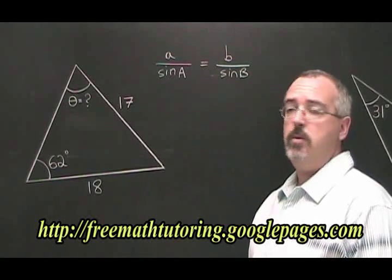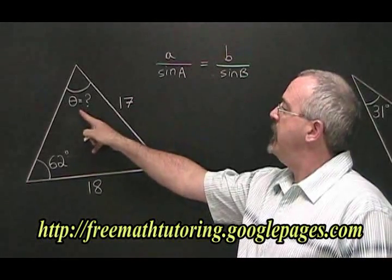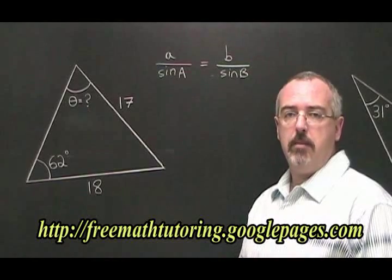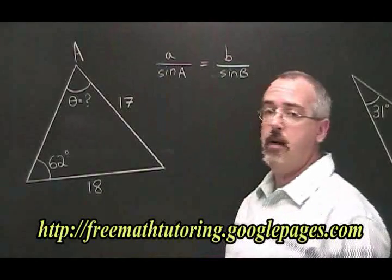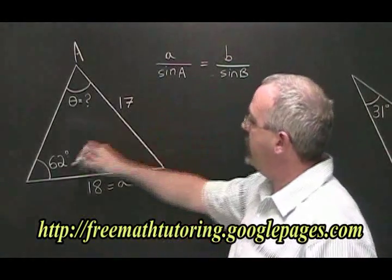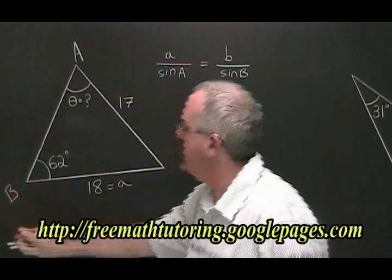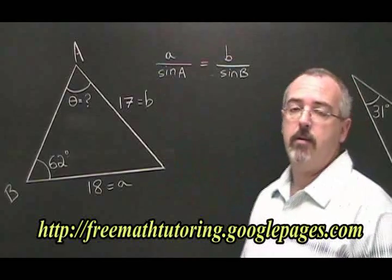In example two, we want to know the measure of this angle theta. Applying our rules for labeling our triangles, let's call this angle A. That means this is side a. If we call this angle B, this must be side b. And we fill in our formula like this.